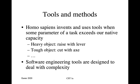What do we mean by tools and methods in this context? Well, in general, we human beings invent and use tools when some parameter of a task exceeds our native capacity. And although some animals other than humans use tools, we are really preeminent in our ability to invent tools and extend our capabilities. So if you come across a heavy object, a large stone that you want to move, you invent the lever so that you can raise it. And if you come across a tough object, like a tree trunk, you invent an axe so you can cut it, or perhaps you get rid of it using fire. And the past 10,000 years have been a story of our coming up with more and better tools to tackle a huge variety of tasks.